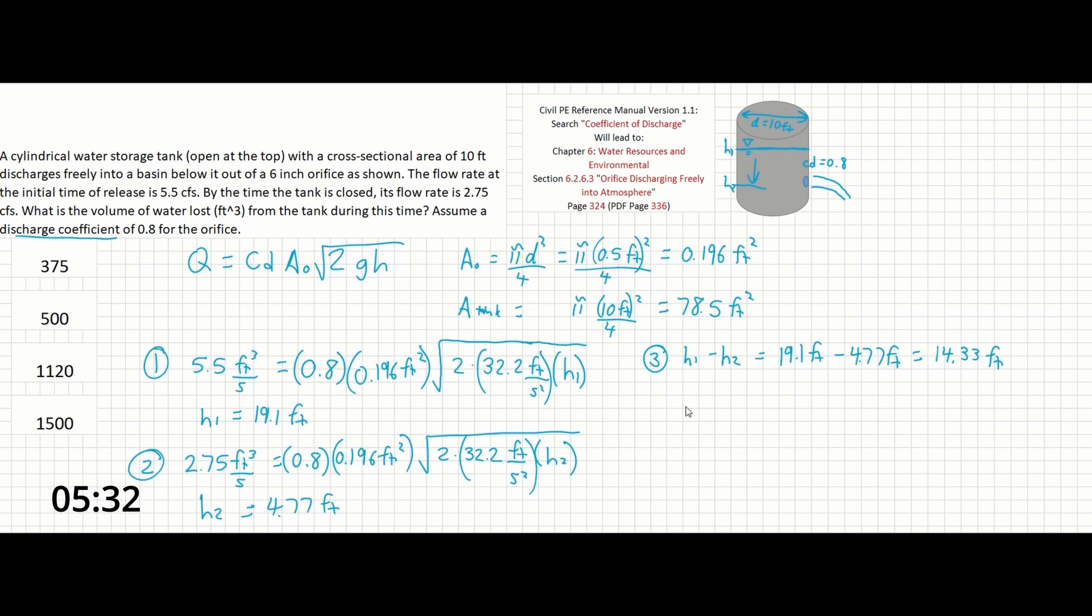And since we have the area of the tank, we can multiply this. Volume of water equals 14.33 feet times 78.5 feet squared. And that should give us 11.24 feet cubed, which is closest to the answer 11.20.